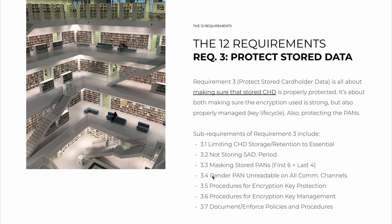3.4 is rendering the personal account numbers unreadable on all communication channels — encrypting it, masking it, etc. — just making sure that if an attacker intercepts your communication, they can't read the numbers. 3.5 is about procedures for key protection; the key is used to encrypt the card data. And 3.6 is about procedures to manage those keys — the crypto period, having a key custodian, maybe split knowledge, and so on.